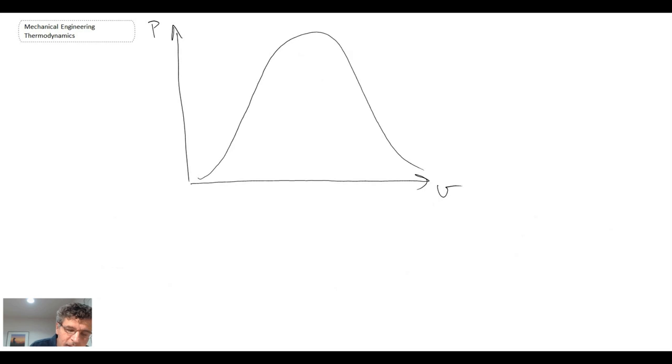So here's our two-phase region. Our critical point is up here. And remember, a few minutes ago we talked about earlier in this lecture, we said that that was PCR, TCR. The place where the ideal gas equation will work is way up over here.